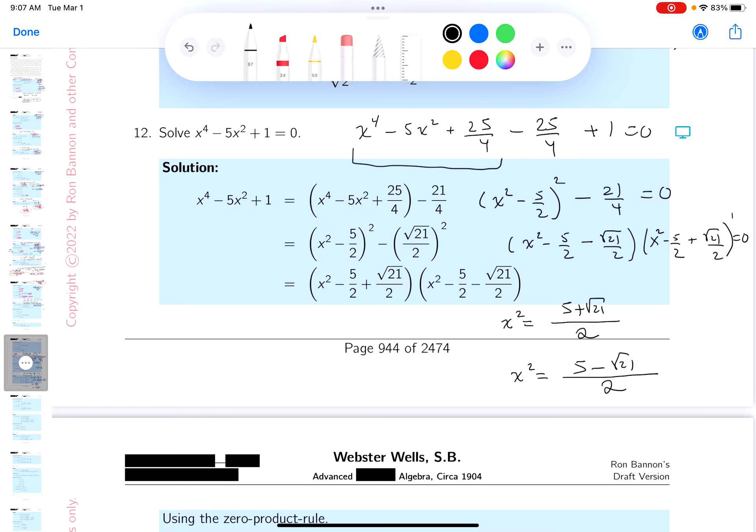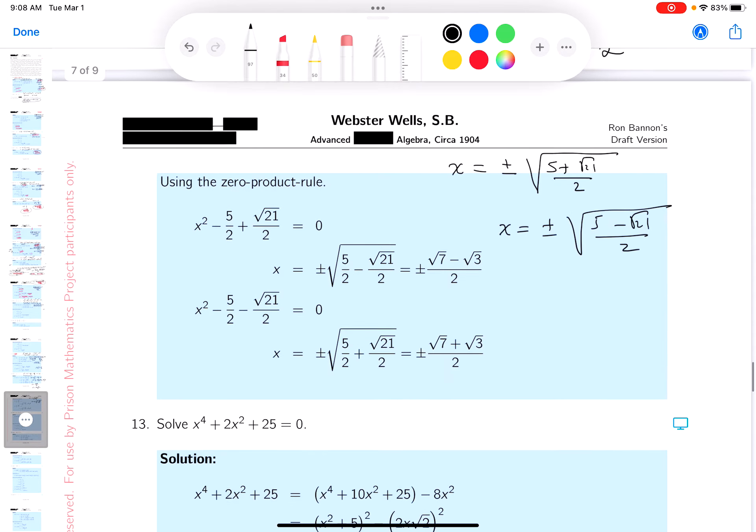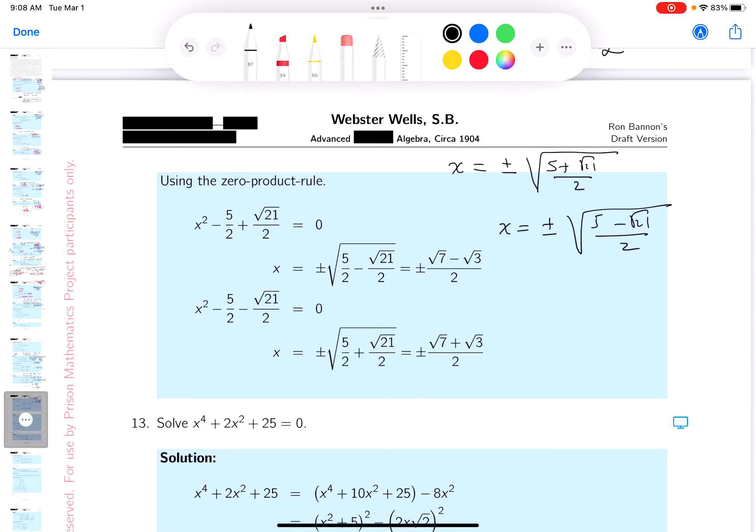And now I can tell you what x is, although I have a nested root. I'm going to put this down for you. And I'll write this over here. x equals plus or minus the square root of 5 plus root 21 over 2. x equals plus or minus 5 minus root 21 over 2. Alright, I've got to work on this, and I'll point out what I mean by that.